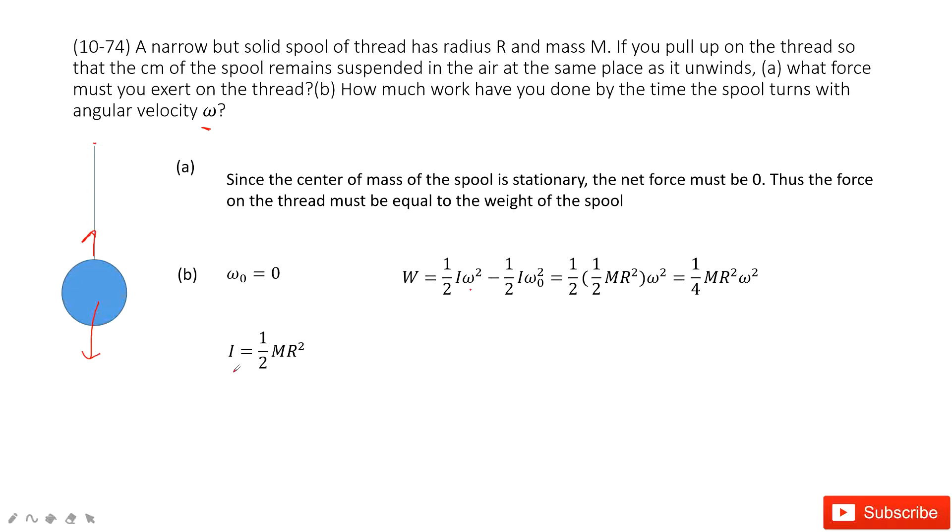So we need to find the moment of inertia I for this object. Of course, it is one half MR squared. M and R are given. So in this case, you input I, and since omega zero is zero, you get the final answer. Thank you.